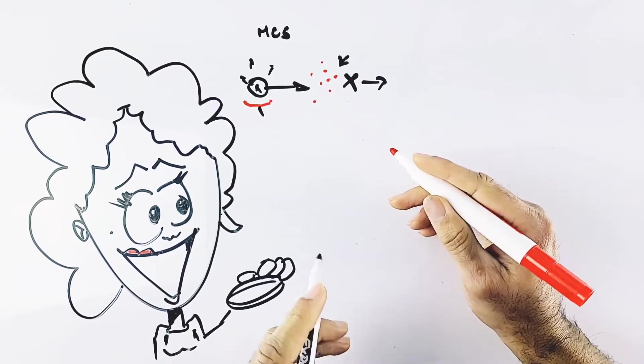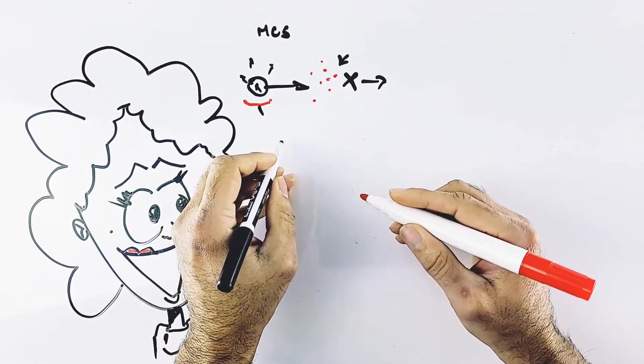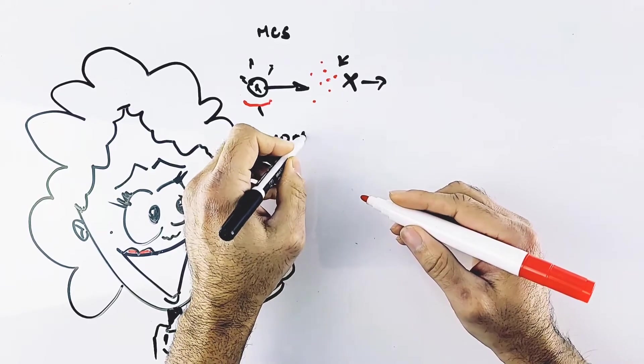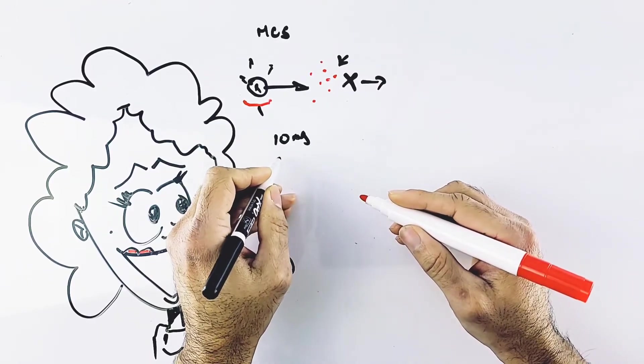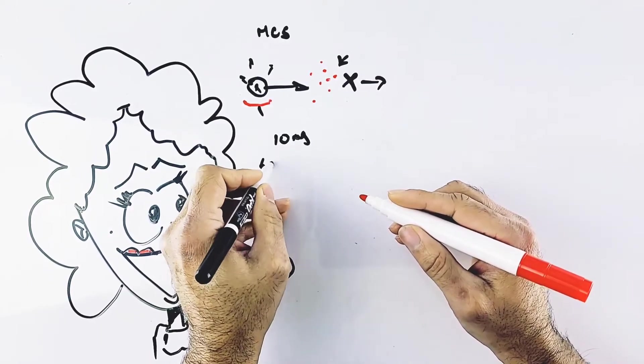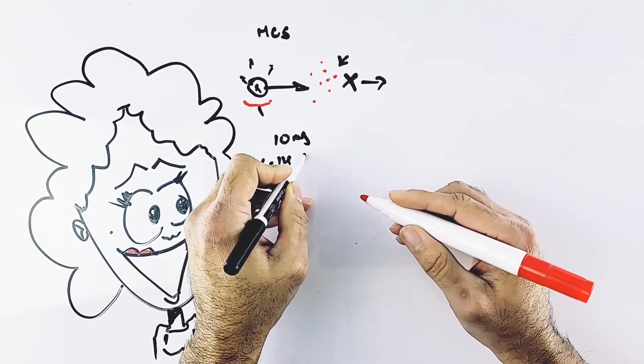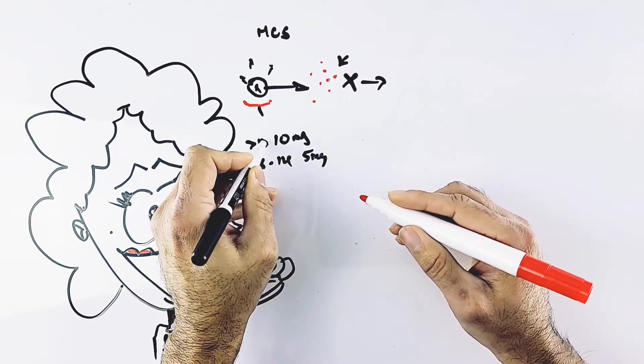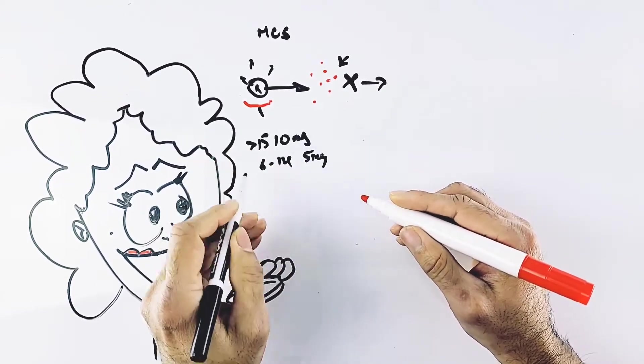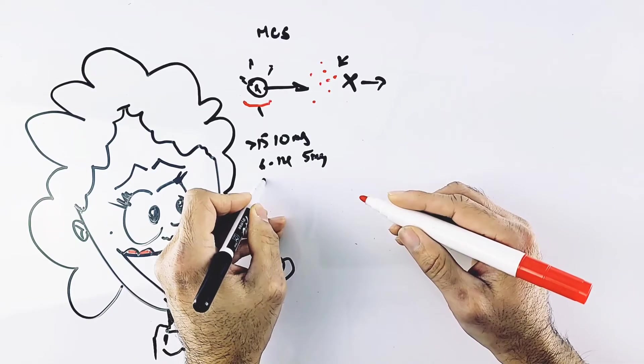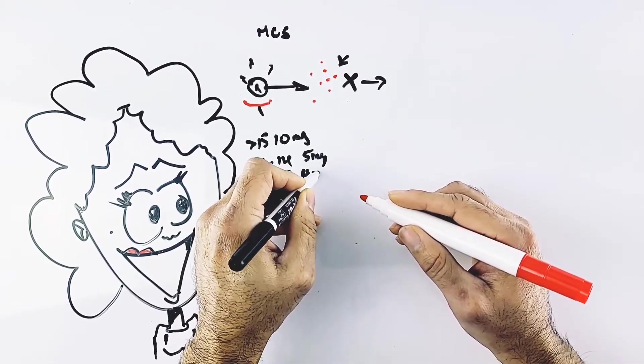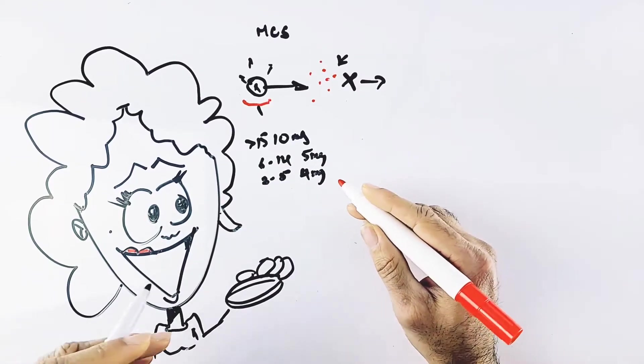For dosing: adults take 10 milligrams as a tablet. If you're 6 to 14 years old, you use a 5 milligram chewable. If you're over 15 up to adults, 10 milligrams. And if you're 2 to 5 years old, you use a 4 milligram tablet.